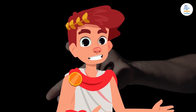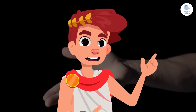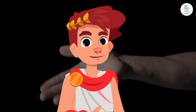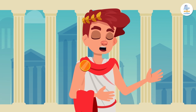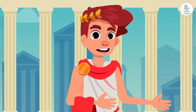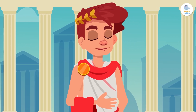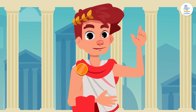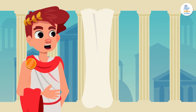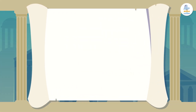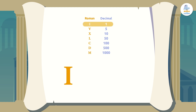Now that we know the origin of Roman numerals, let's look at the letters that make up the Roman numeral system. The numbering system is made up of seven capital letters, and each letter has a numerical value. Let's see the value the Romans gave to each letter. The letter I has a value of 1.